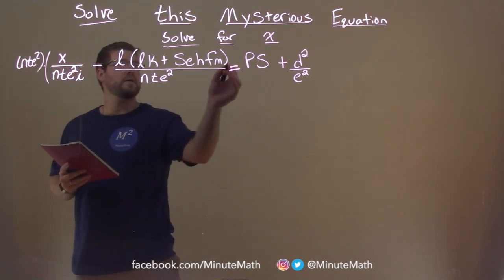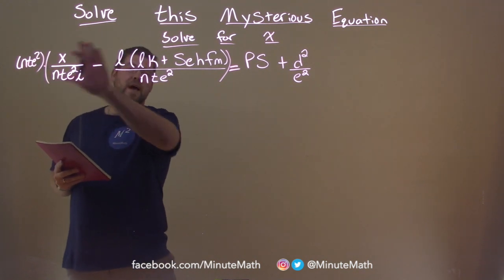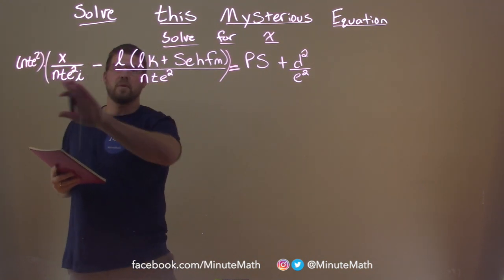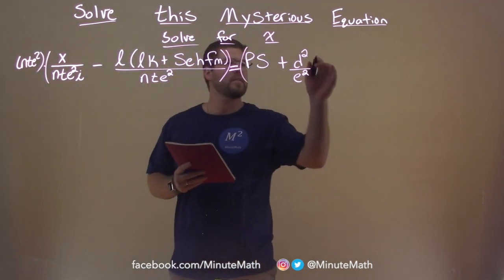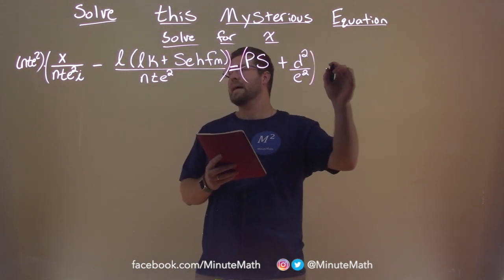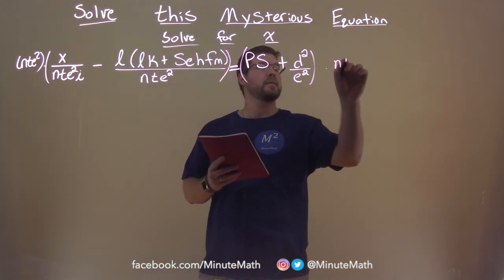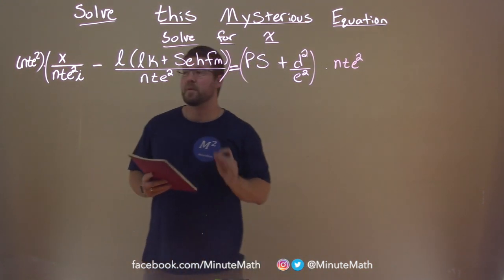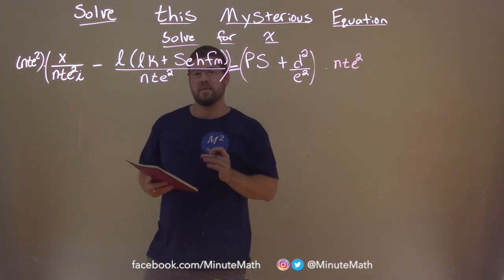Now remember, we're going to have to distribute, so it's through everything. So I just put parentheses here just so we can see that. And the same thing on this side. We're going to multiply both sides by nte squared.